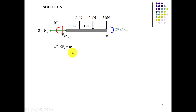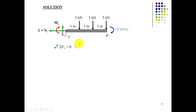We take sigma Fy equals zero, taking upward forces as positive and downward as negative. We have the shear Vc acting upward so it is positive, and the remaining three five-kilonewton forces over the span are taken as negative. So: Vc minus 5 minus 5 minus 5 equals zero. Therefore, shear at point C equals 15 kilonewtons.